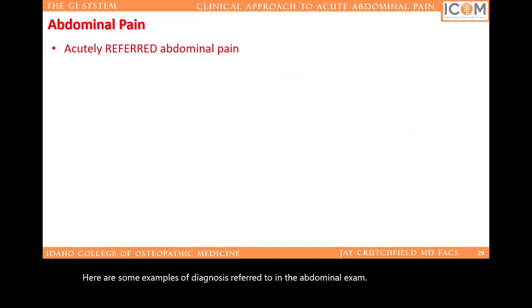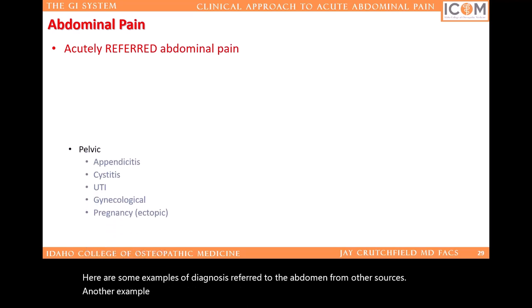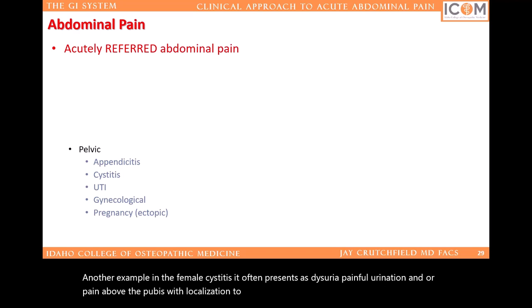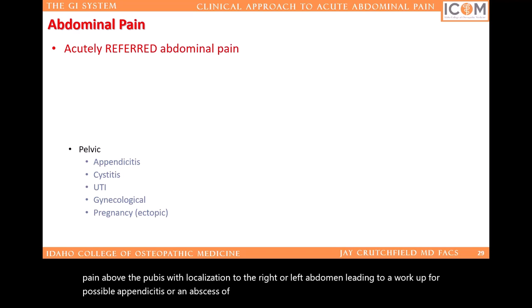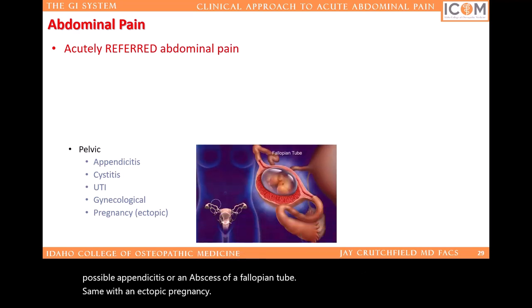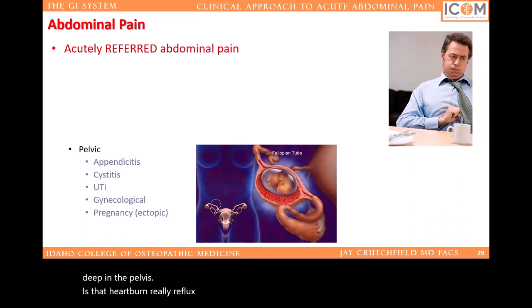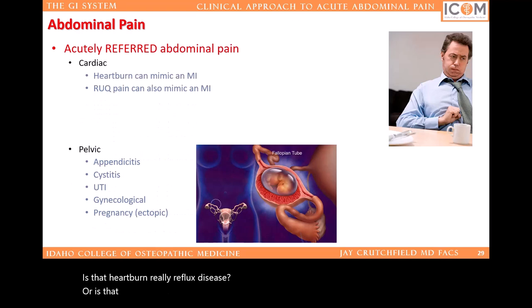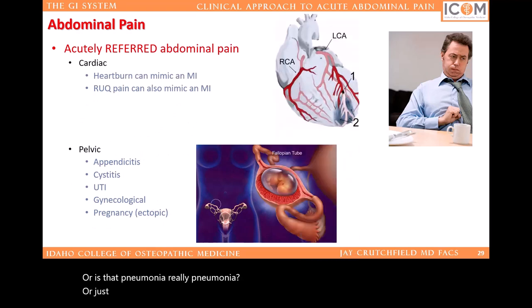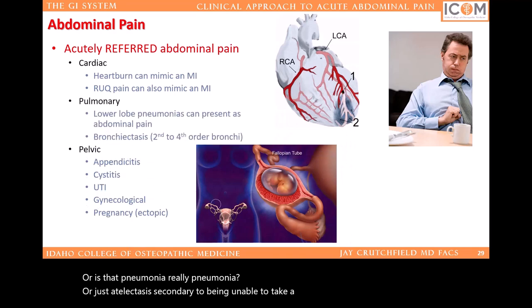Here are some examples of diagnoses referred to the abdomen from other sources. In the female, cystitis — it often presents as dysuria, painful urination, and pain above the pubis with localization to the right or left abdomen, leading to a workup for possible appendicitis or an abscess of a fallopian tube. Same with an ectopic pregnancy — generalized abdominal pain, and only later with pain localizing to the right lower quadrant or deep in the pelvis. Is that heartburn really reflux disease? Or is that pneumonia really pneumonia — or just atelectasis secondary to being unable to take a deep breath because of chest pain?